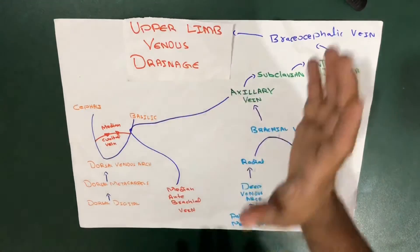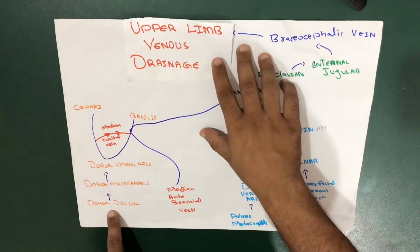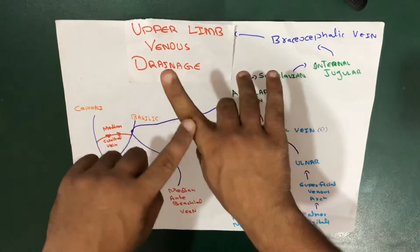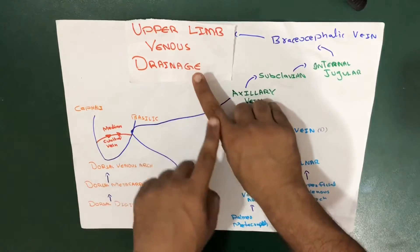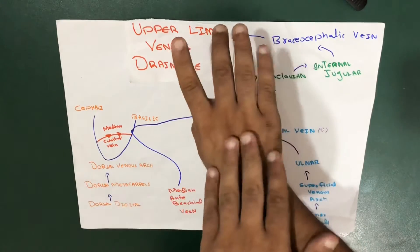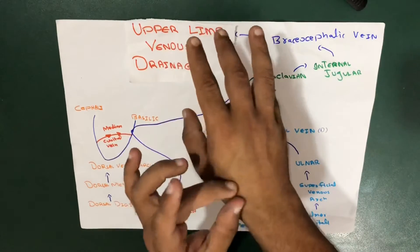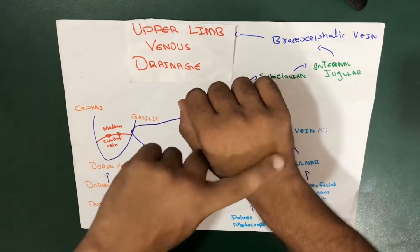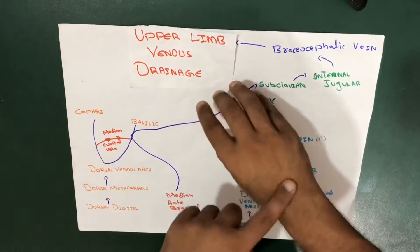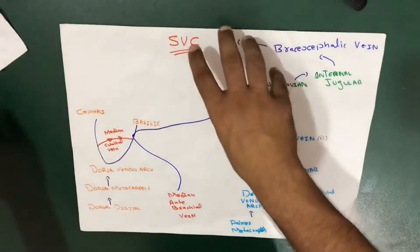We will consider the superficial veins first. The hand is on the dorsum side. Veins start as dorsal digital veins, then move towards the dorsal metacarpal veins. All the veins drain together into an arc-shaped big vein, which we call the dorsal venous arc. So dorsal digital veins end up in dorsal metacarpals, and dorsal metacarpals end up in the dorsal venous arc.